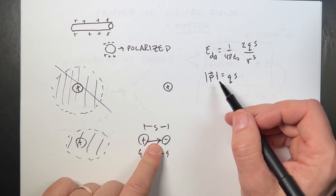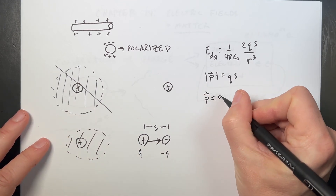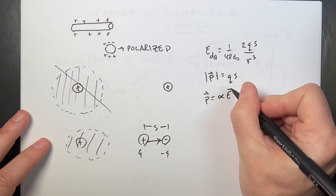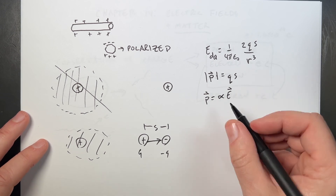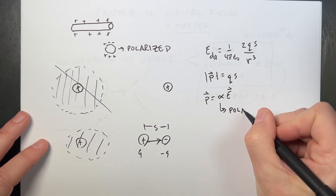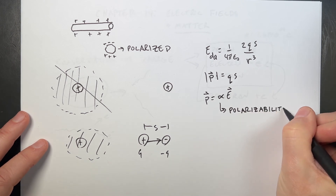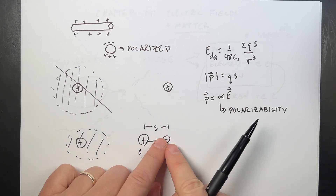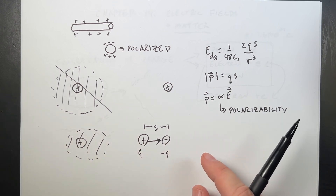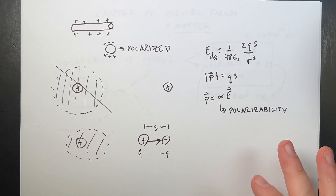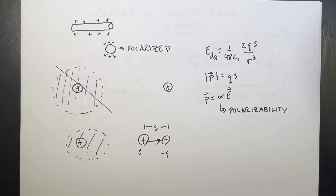It turns out the dipole moment depends on the applied electric field. The magnitude p equals alpha times the applied electric field, where alpha is the polarizability. The higher that value, the more the charges separate when you apply an electric field, producing a larger induced dipole field. Let's calculate the force when I put a charge near an induced dipole.